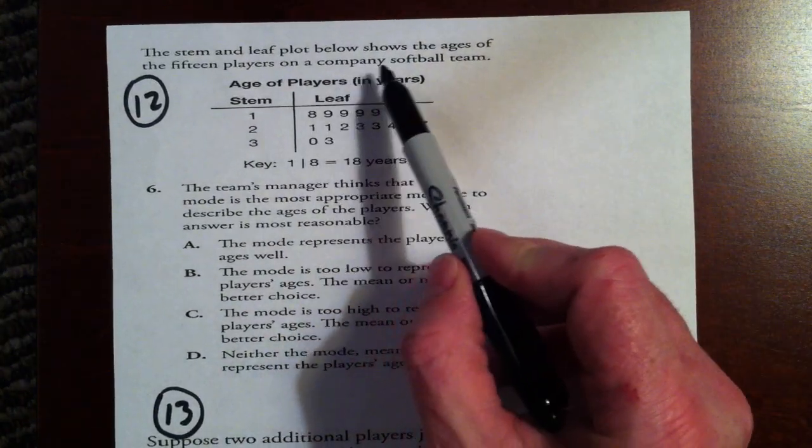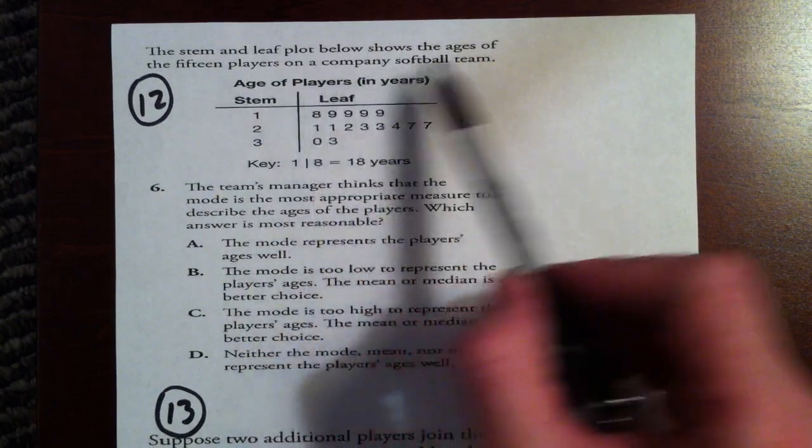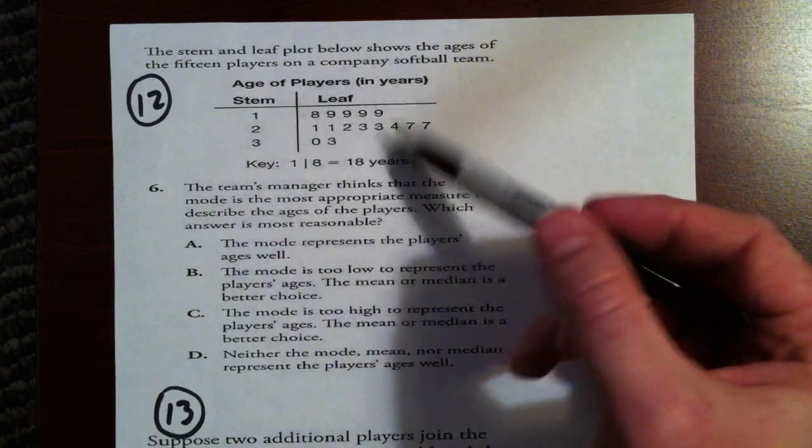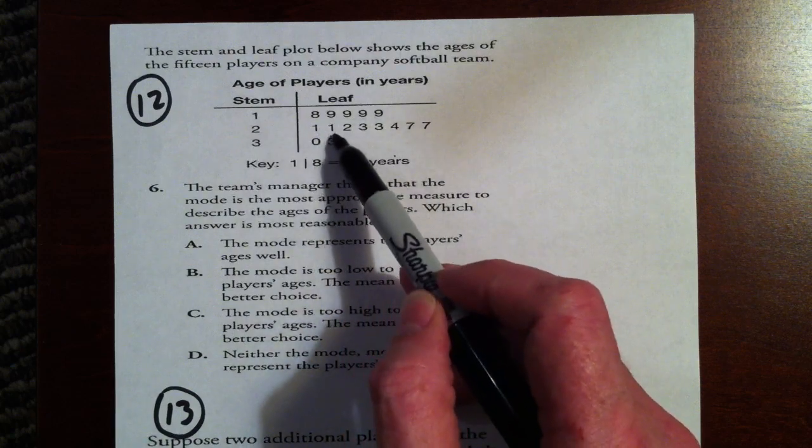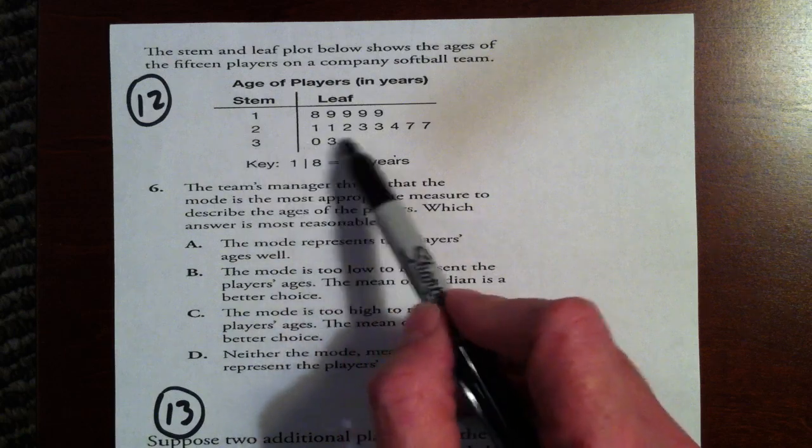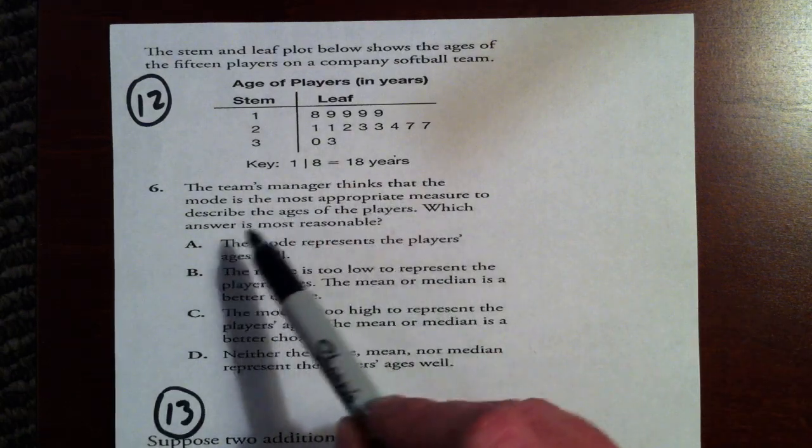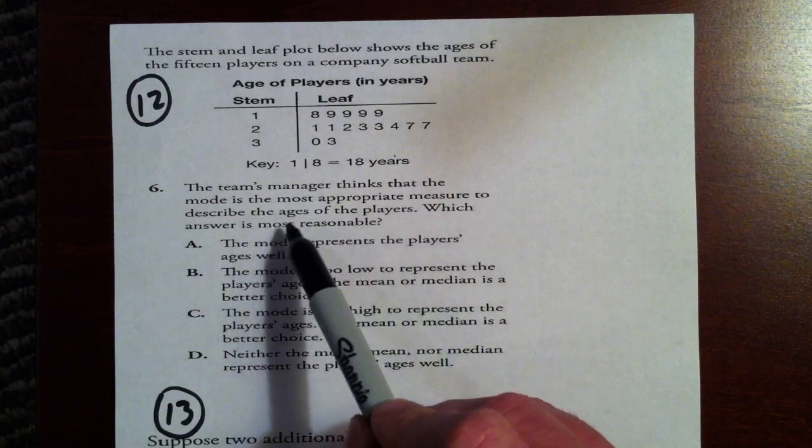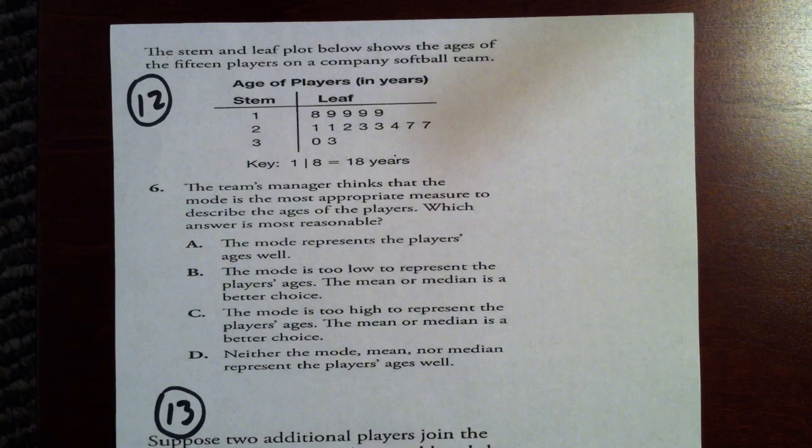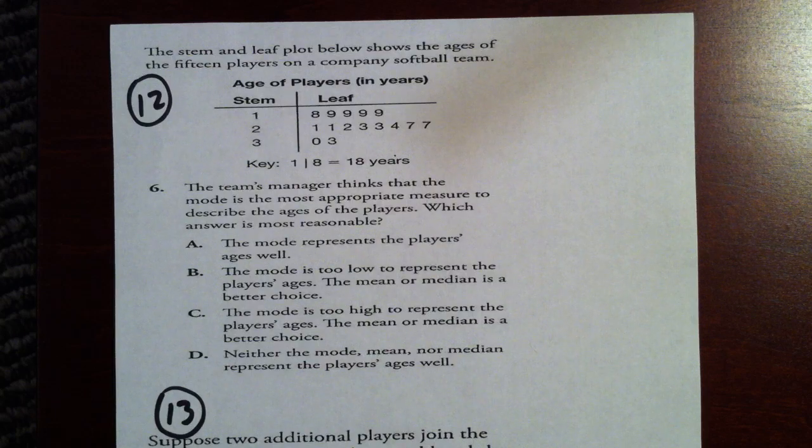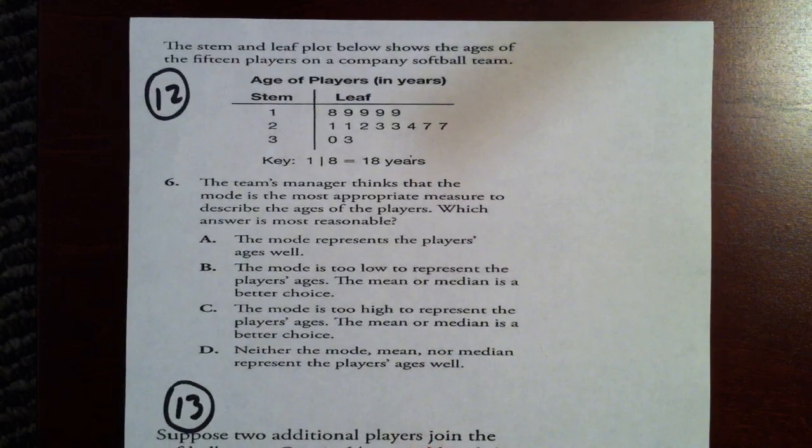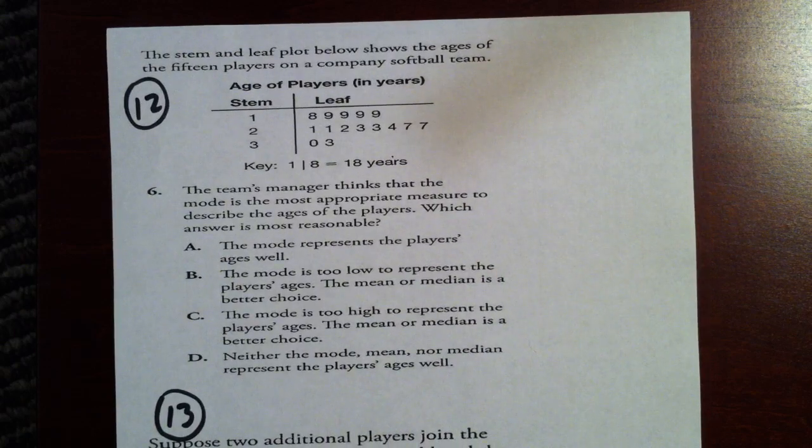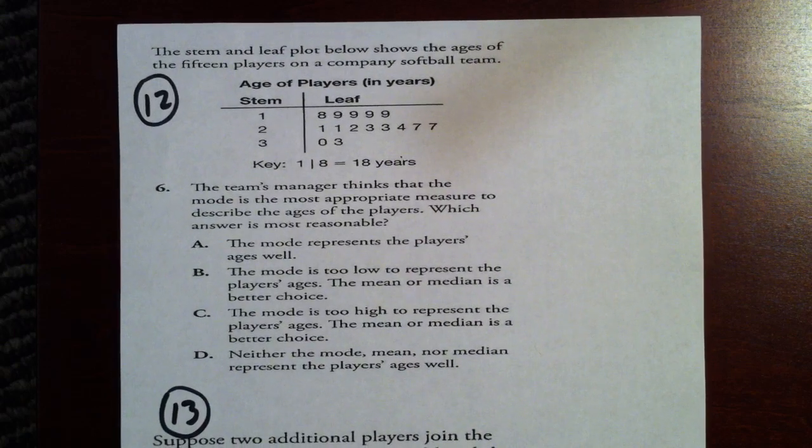The stem and leaf plot below shows the ages of the 15 players on a company softball team. And here, as we learned before, we've got 18, 19, 19, 19, 19, 19, 21, 21, 22, and so on. And we have a few down here, 30 and 33. The team's manager thinks that the mode is the most appropriate measure to describe the ages of the players. In other words, he's saying, well, most of these people are this age, and therefore that describes their overall averages. In other words, that's a good measure of central tendency. And we can use central tendency. We can use median, which is the number in the middle. We can use mode, which is the number that occurs the most, as he's doing. Or we can use the average. We can add them all up and divide by the number of people we have.